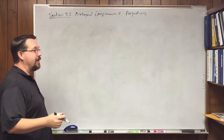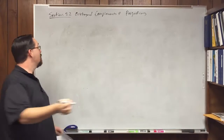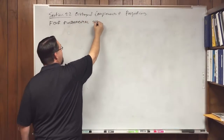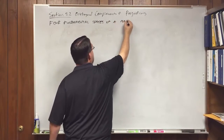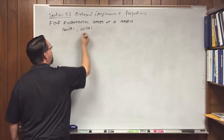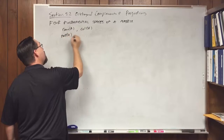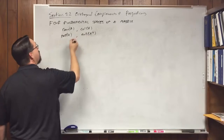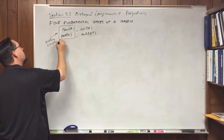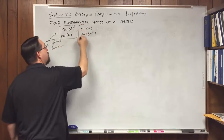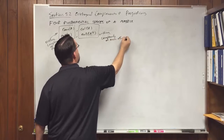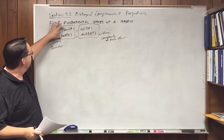Since these spaces are connected in this way, instead of just three fundamental spaces, we now talk about the four fundamental subspaces of a matrix: the row space of A, the column space of A, the null space of A, and the null space of A transpose. We consider four because the row space and null space of A are orthogonal complements of each other, and so are the column space and null space of A transpose.